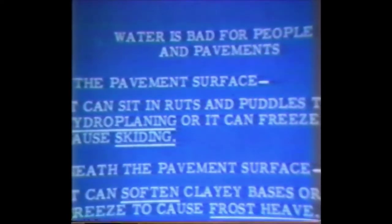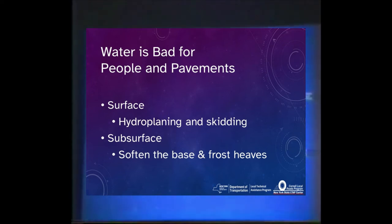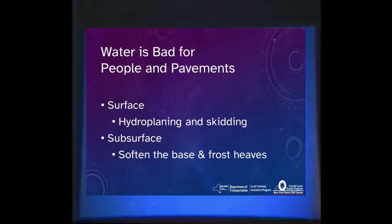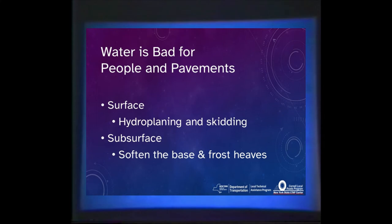Many people think of culverts and bridges when we talk drainage, but there's another very critical kind: road surface drainage. Water is bad for the people driving on roads and for the pavements. If it sits on the surface in ruts and puddles, it causes hydroplaning, which is dangerous at high speed. It can freeze, causing skidding. Worse yet, as it circulates beneath the pavement by trickling in, it can soften clay bases and freeze to cause frost heaves. One of the key features of successful road building is to have good drainage.